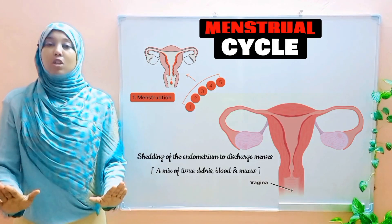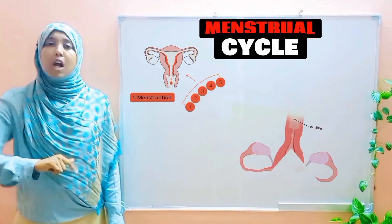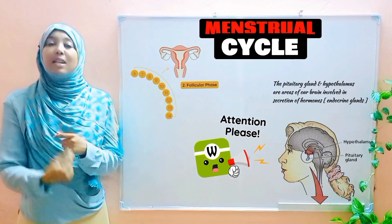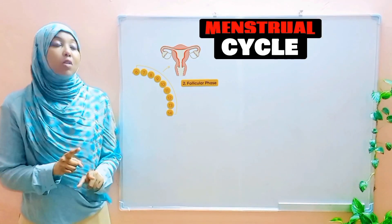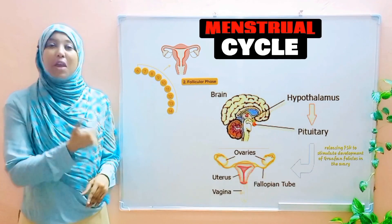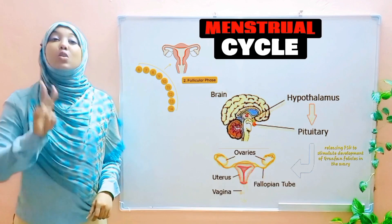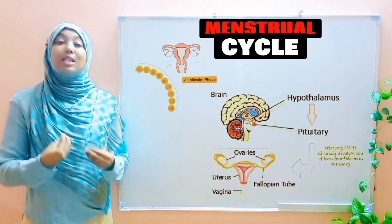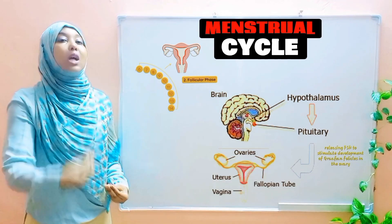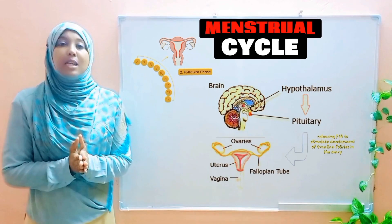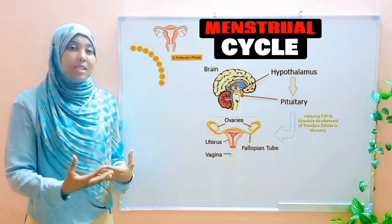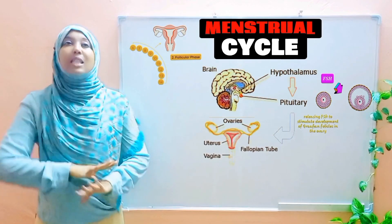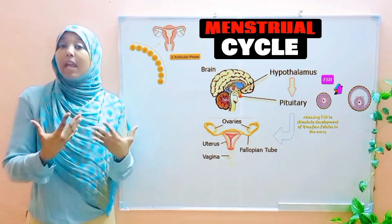That is menstruation. Immediately after, the body enters the second phase: the follicular phase. The pituitary gland secretes follicle-stimulating hormone, or FSH. FSH has two functions, both targeted at the ovary. First, FSH stimulates the development of the graafian follicles — a layer of cells that surround and nourish the egg cells.